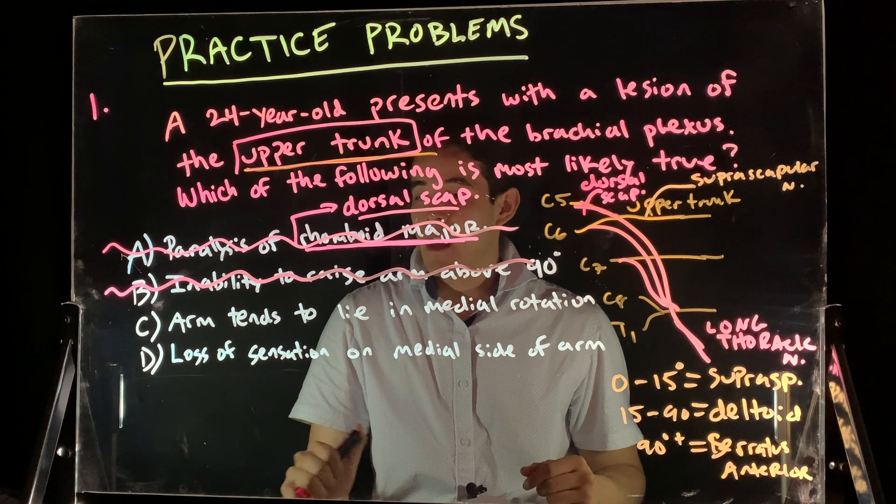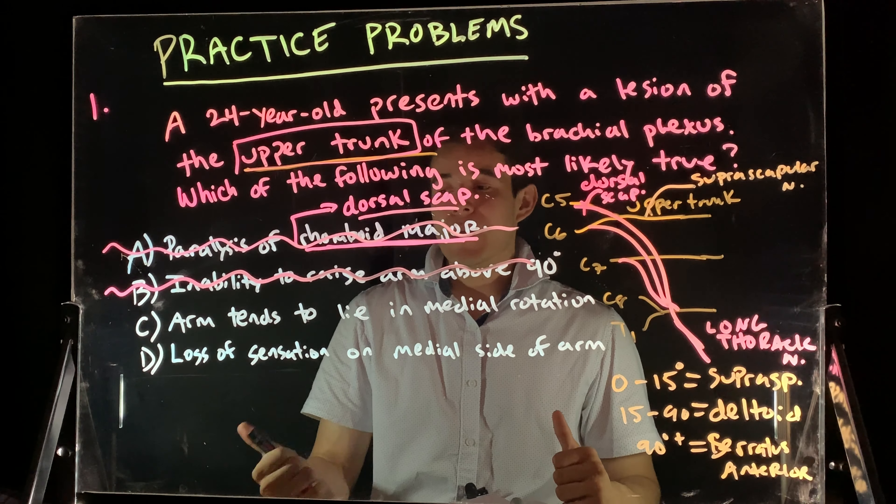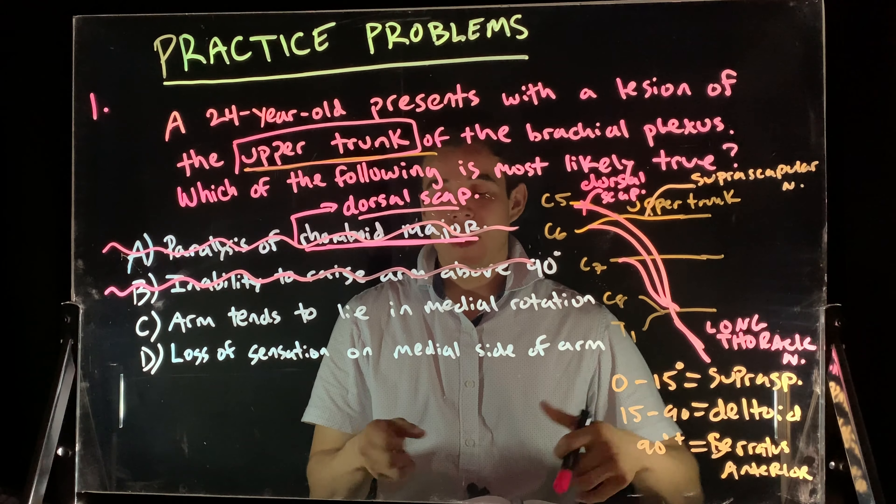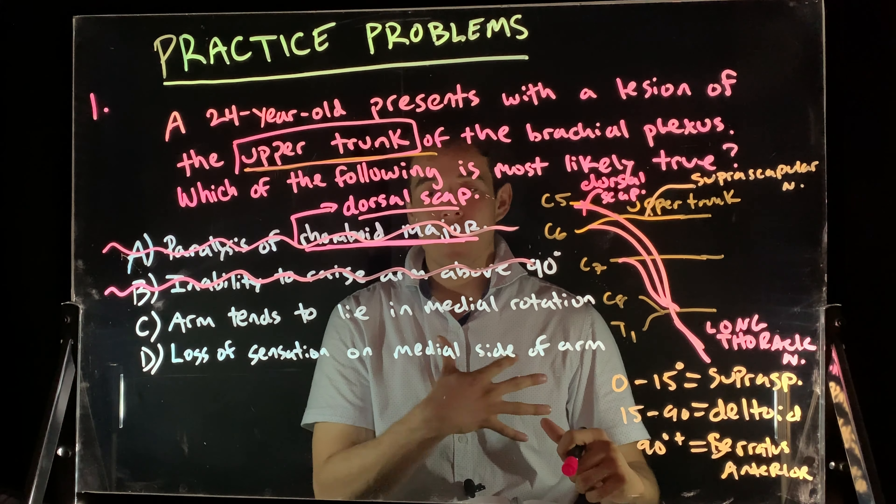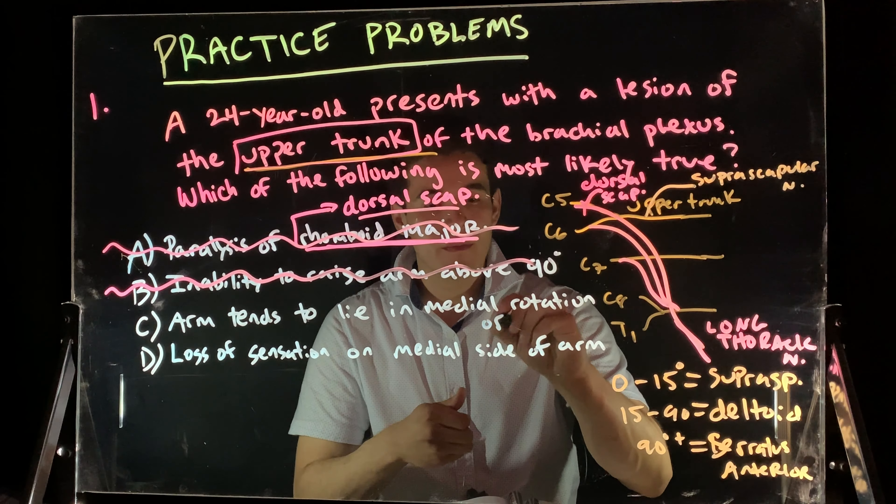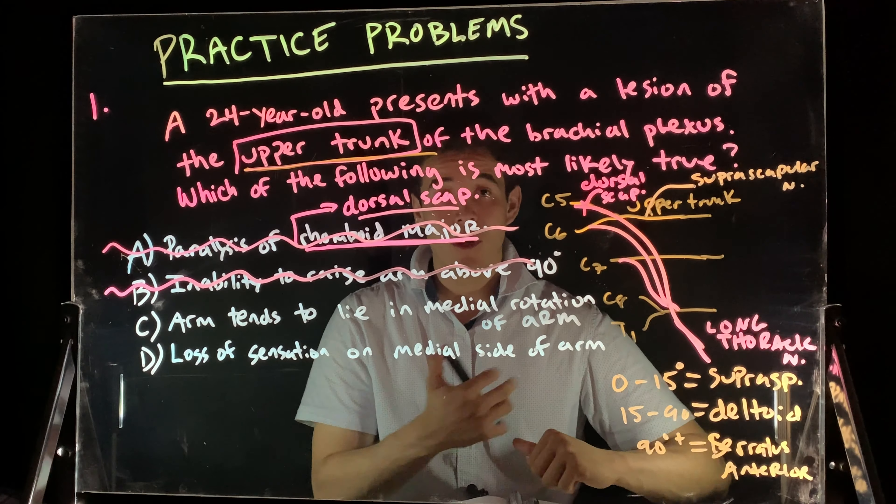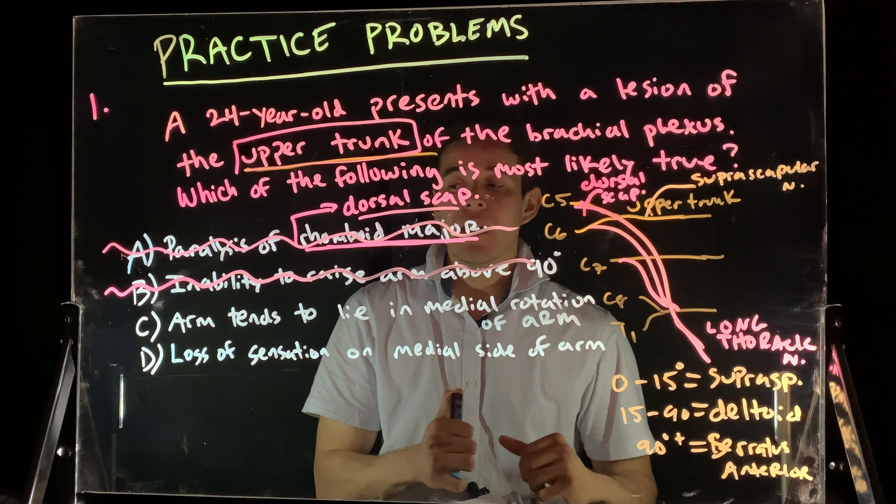So, if we go to C, arm tends to lie in the medial rotation. What's basically happening is you have muscles that help you medially rotate the arm. So, we should say here, medial rotation of arm. You have muscles that help you medially rotate the arm and laterally rotate the arm.